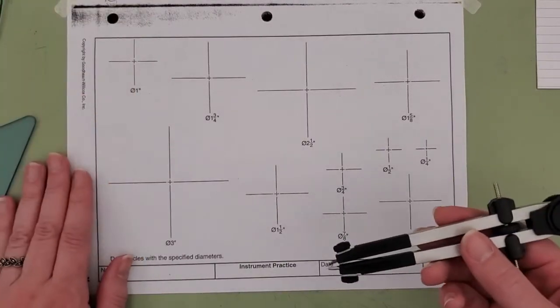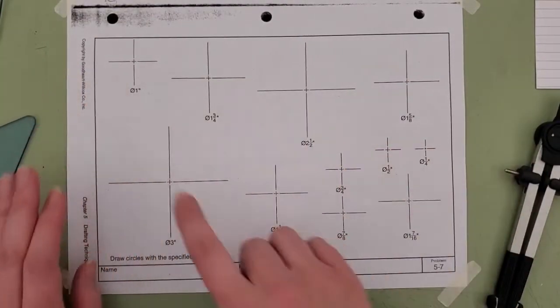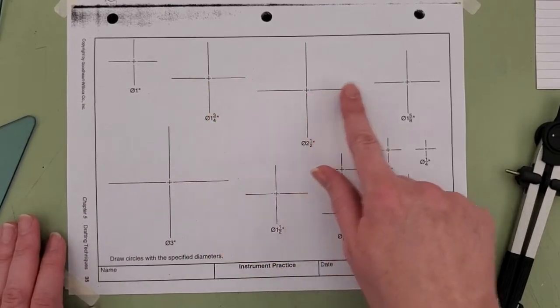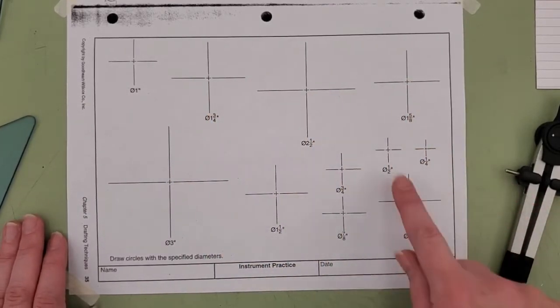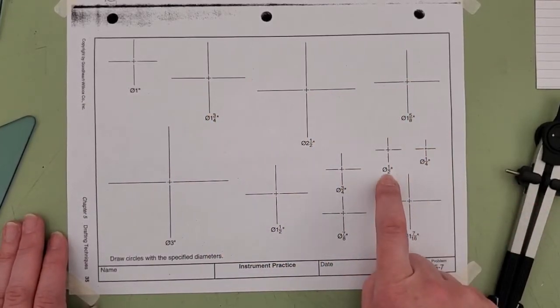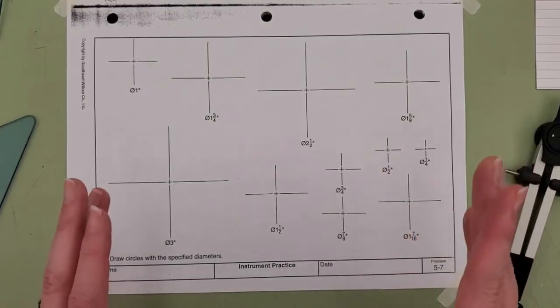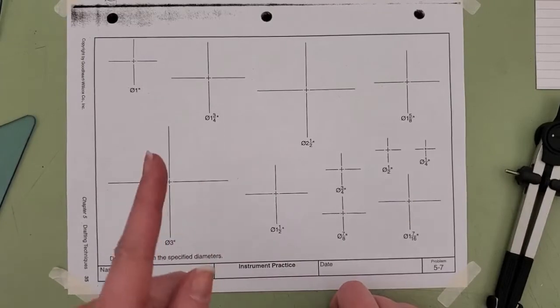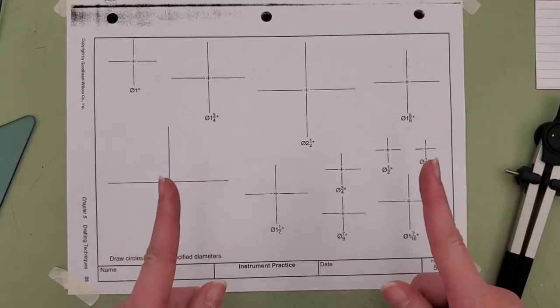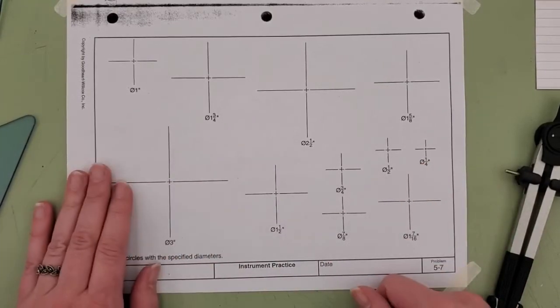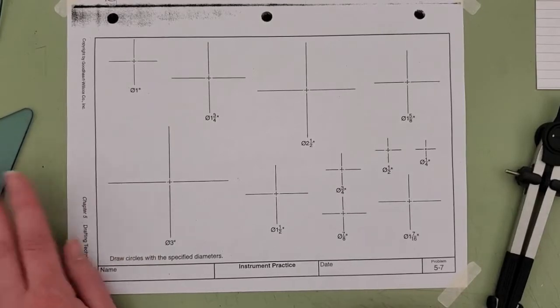Looking at our drawing, we have multiple center points that we're going to be using to draw various diameters of circles. When you see a circle with a line all the way through it, that stands for diameter—the total distance from one end of the circle to the other end of the circle.